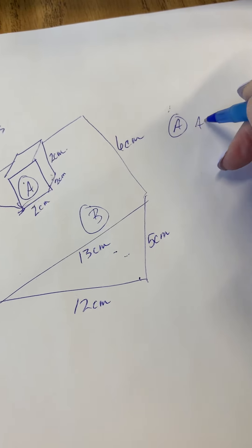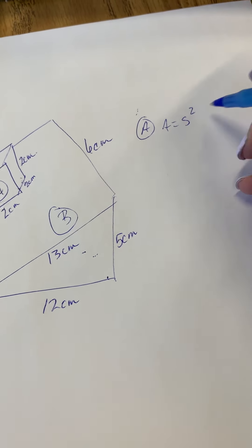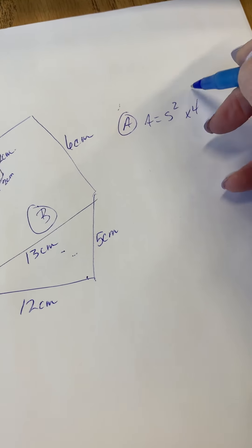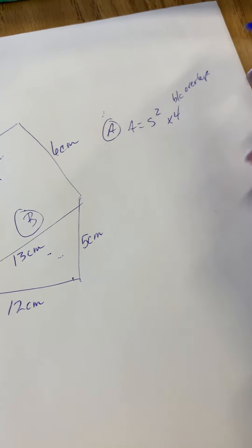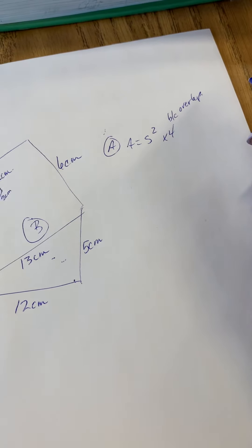So let's start with part A. I always write down my formula. I'm talking about a square, so side squared times four sides because of overlap. You can find six sides and then take off two at the end.